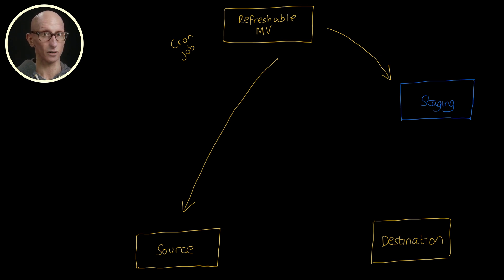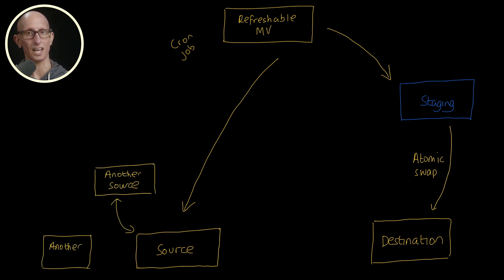And then once the materialized view is finished, the staging table will be atomically swapped into place as our new destination table. Refreshable materialized views are commonly used to speed up complex queries, so having them join on one or more other tables is common.